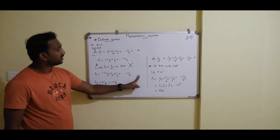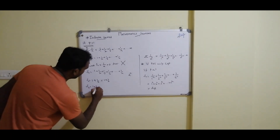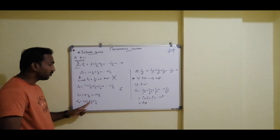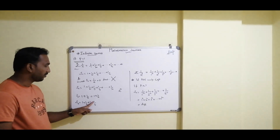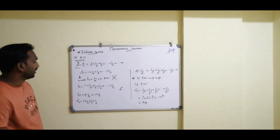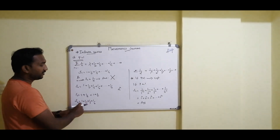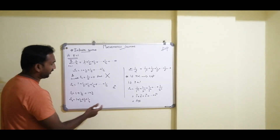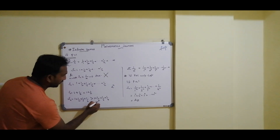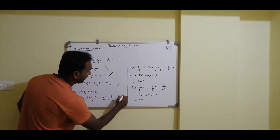Substituting N = 2, we get S4 — we add the first 4 terms: 1 + 1/2 + 1/3 + 1/4. The first two terms give 1 + 1/2, and the next two are 1/3 + 1/4. If we replace 1/3 with 1/4 (since 1/3 > 1/4), the sum is greater than 1 + 1/2 + 1/4 + 1/4. Adding those last two terms gives another 1/2, so S4 > 1 + 2×(1/2).